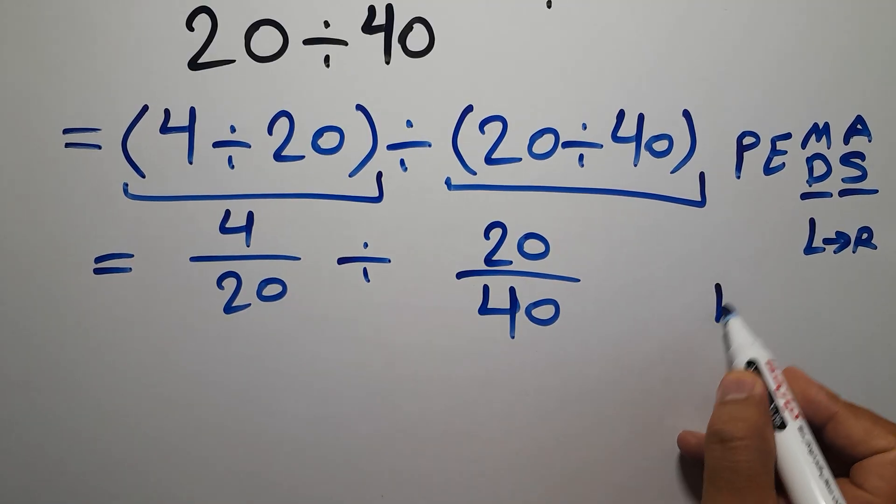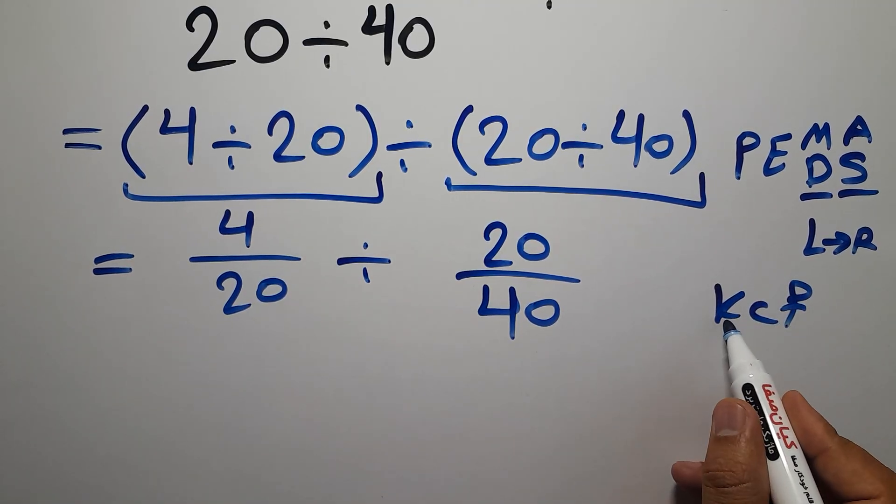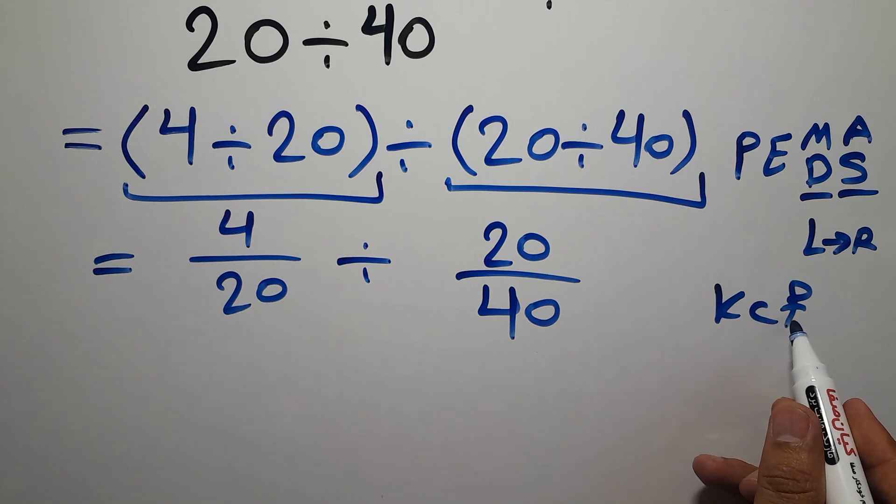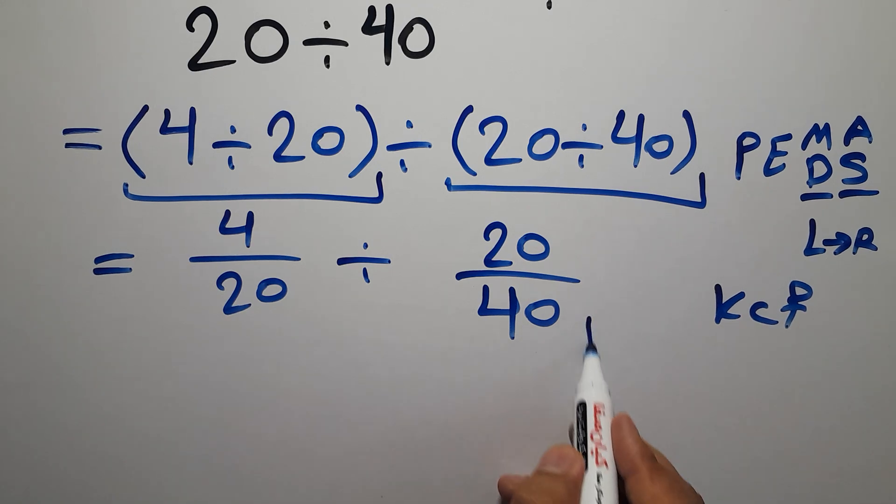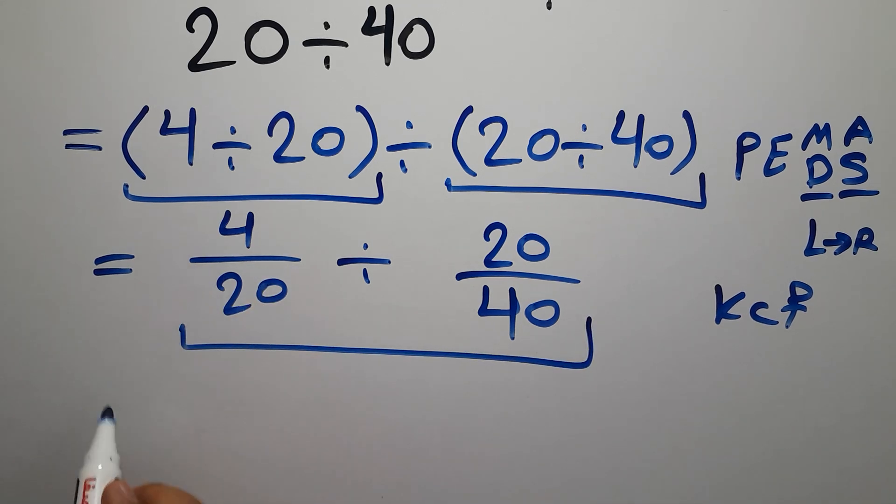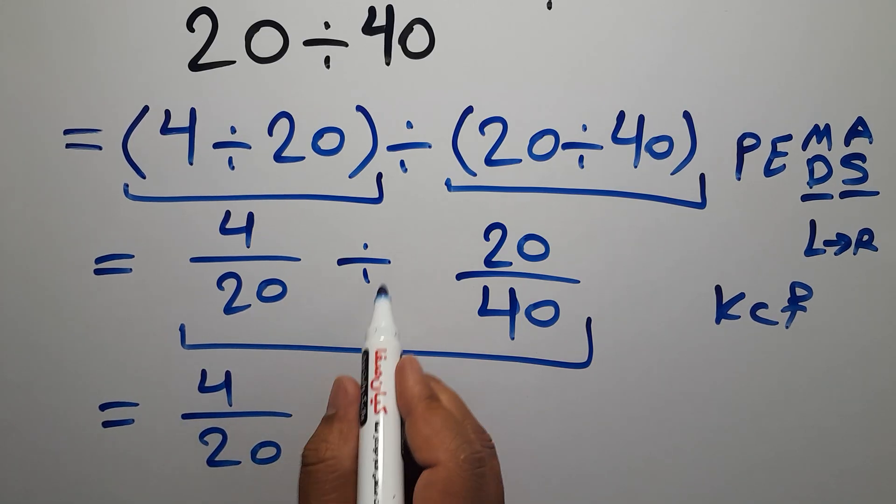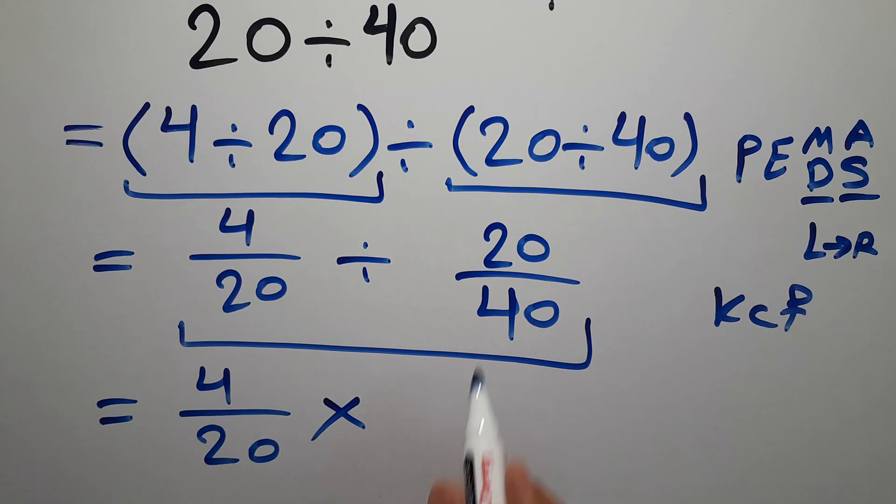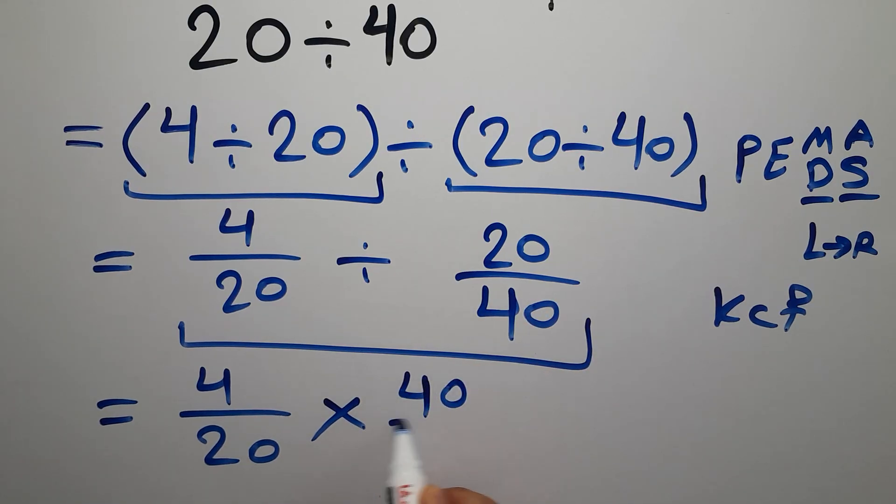According to the KCF rule, K stands for keep, C stands for change, and F stands for flip. We can write: keep the first fraction 4 over 20, change division to multiplication, and flip the second fraction 40 over 20.